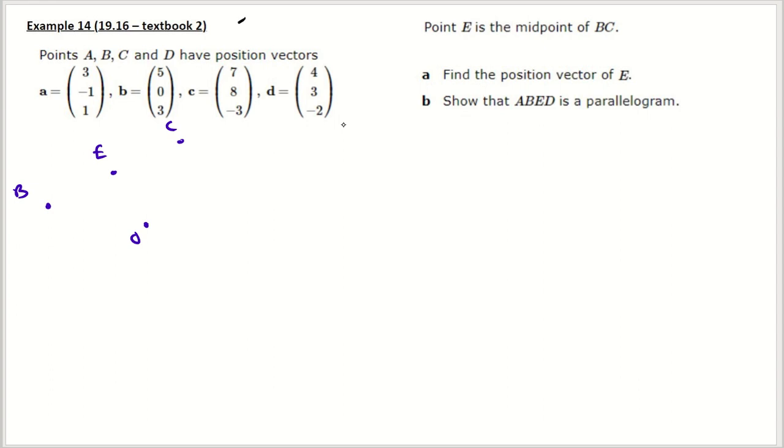and the origin is here. So to get to OE, which is the position vector of that, I'm going to need to go to either O to B or O to C first, so I'll just go to O to B, and then I'll need a half of BC, so one half. I'll just write the half of B to C.